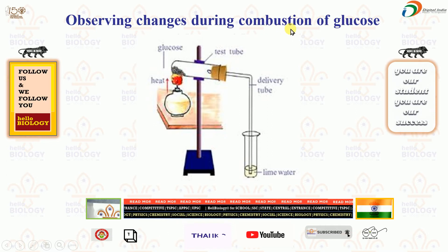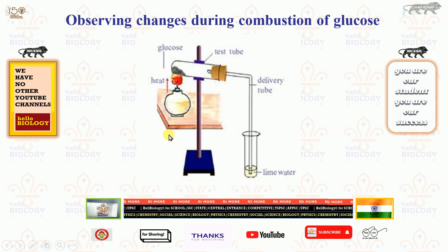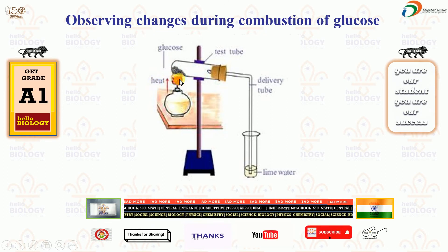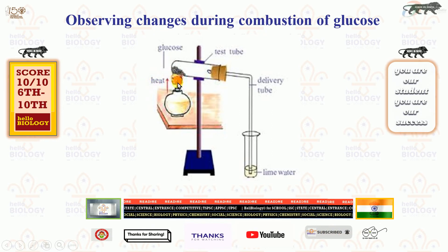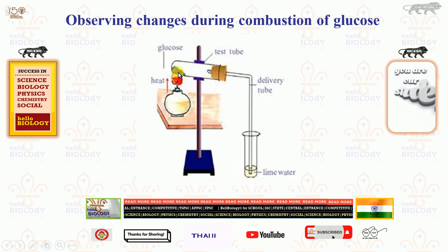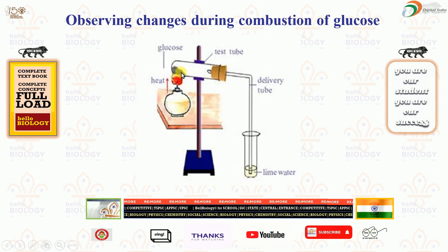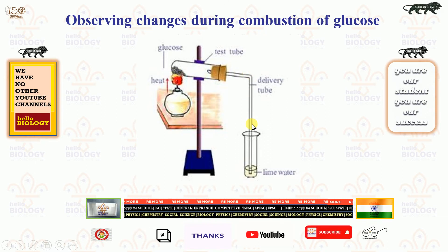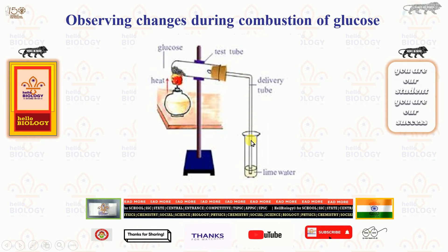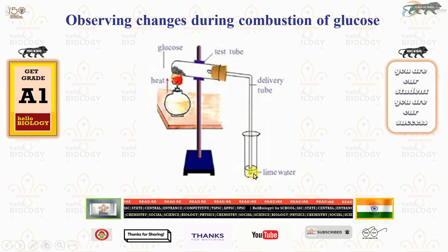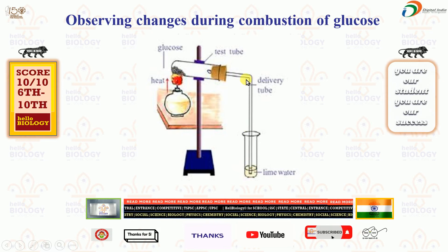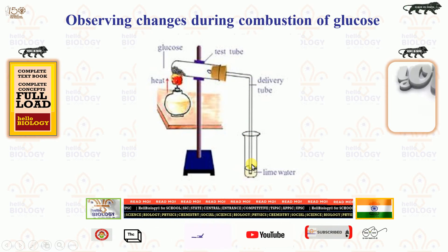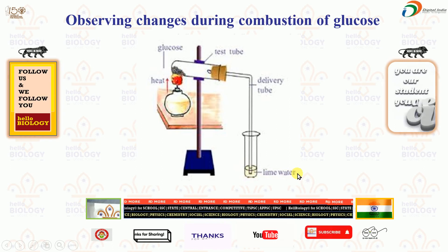Combustion means burning of glucose outside our body. We observe changes: heat causes the glucose to melt down, and from there it starts giving off carbon dioxide gas. To confirm which gas is produced, we insert a delivery tube into lime water — when carbon dioxide combines with lime water molecules, it turns milky white.